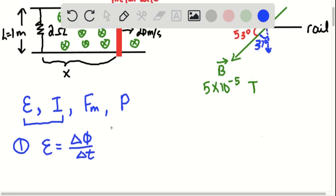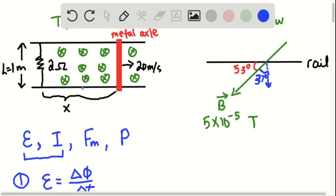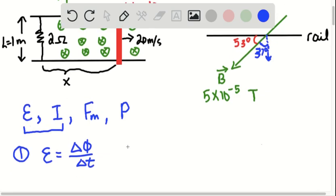And since in this case, we only have one coil, one loop, my N right here, which I did not write, would be one and it wouldn't change our answer. So I just omitted it for the sake of simplicity.